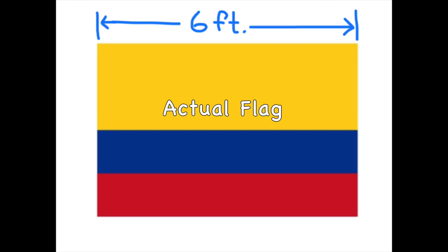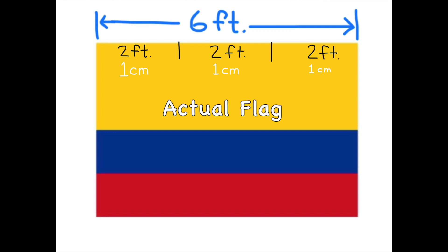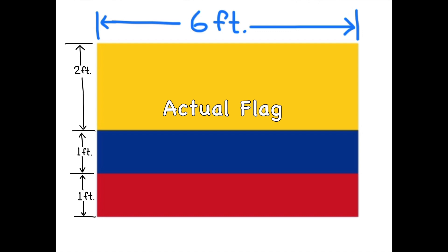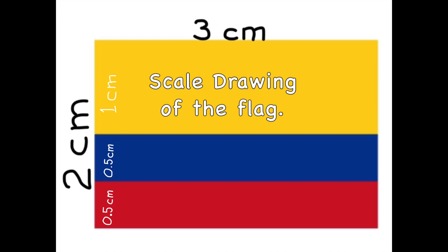This image represents the actual Colombian flag that's 6 feet wide, divided into three separate sections each 2 feet long. For every 2 feet of the actual flag, 1 centimeter is represented on the scale drawing. The height of the actual flag is 4 feet tall, separated into 2 feet, 1 foot, and 1 foot. The scale drawing of the flag is 3 centimeters long and 2 centimeters tall. The red stripe is 5 tenths of a centimeter tall, as is the blue stripe, and the yellow stripe is 1 centimeter tall.